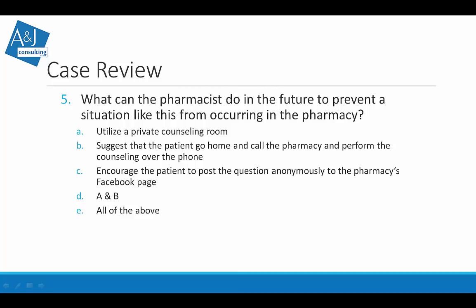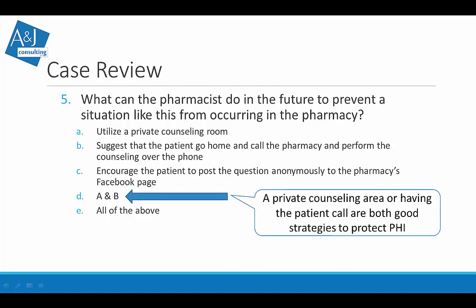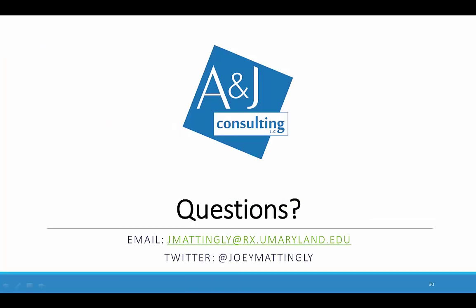What can the pharmacist do in the future to prevent a similar situation? The correct answer is D — answers A and B. Utilizing a private counseling room or suggesting the patient call the pharmacy to receive counseling over the phone are both good strategies to protect PHI. Encouraging patients to post questions anonymously on the pharmacy's Facebook page would not be appropriate. That ends today's lecture — if you have any questions, please send an email.